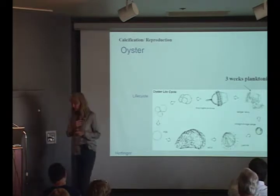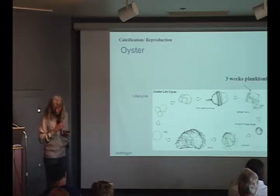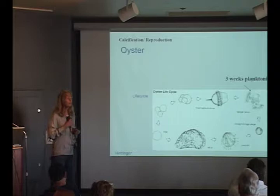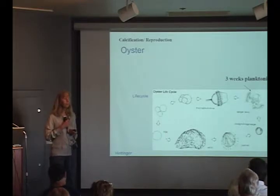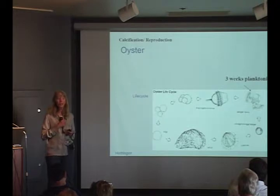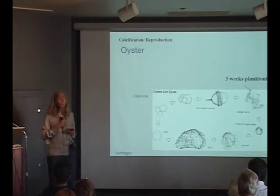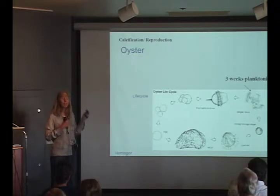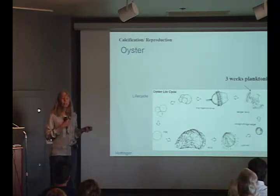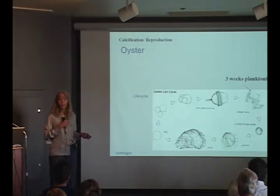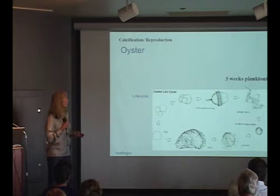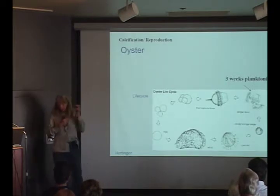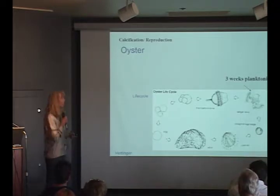One important caveat: nitrogen-fixing organisms need a lot of iron, and iron is often limiting in the ocean — just as it can be for humans. Nitrogen fixation can only increase if there's enough iron. In experiments where there's not enough iron, nitrogen fixation will not increase. So part of the question is whether the future ocean will have more or less iron.